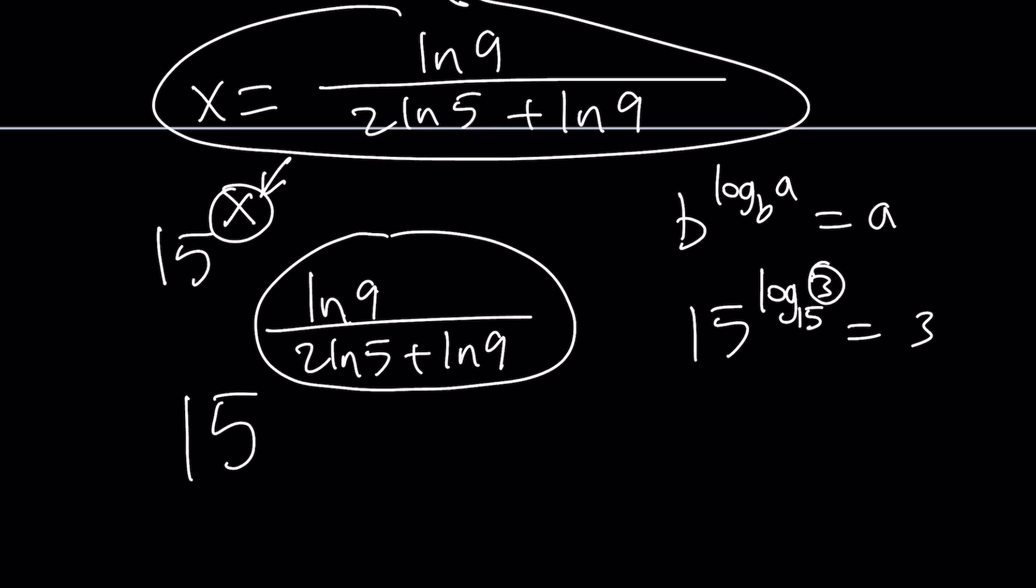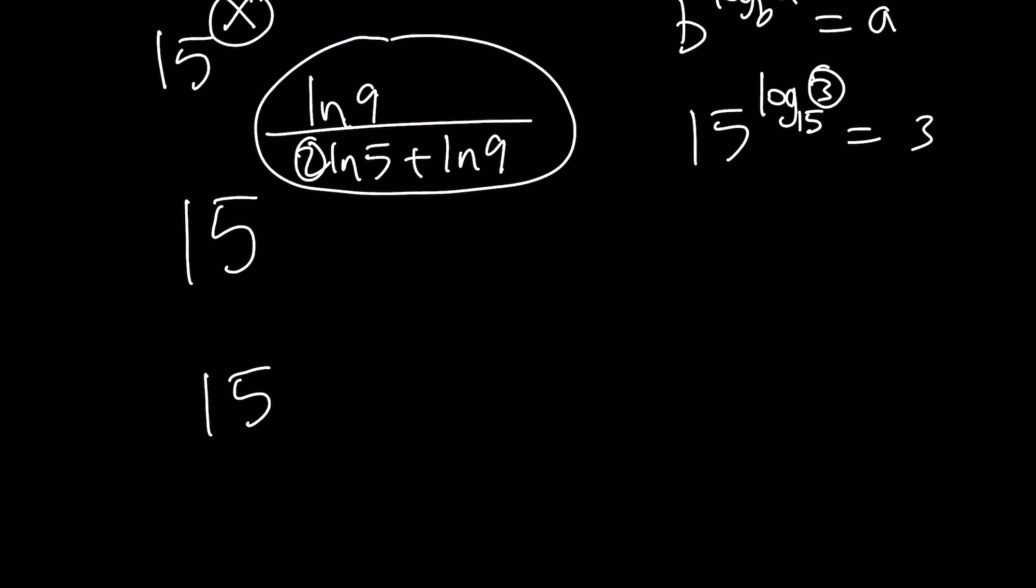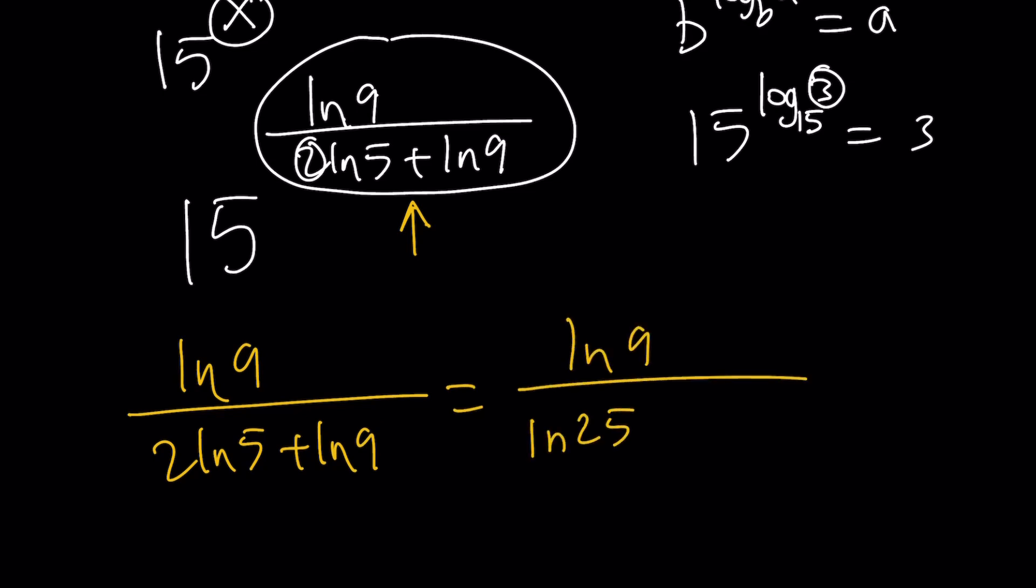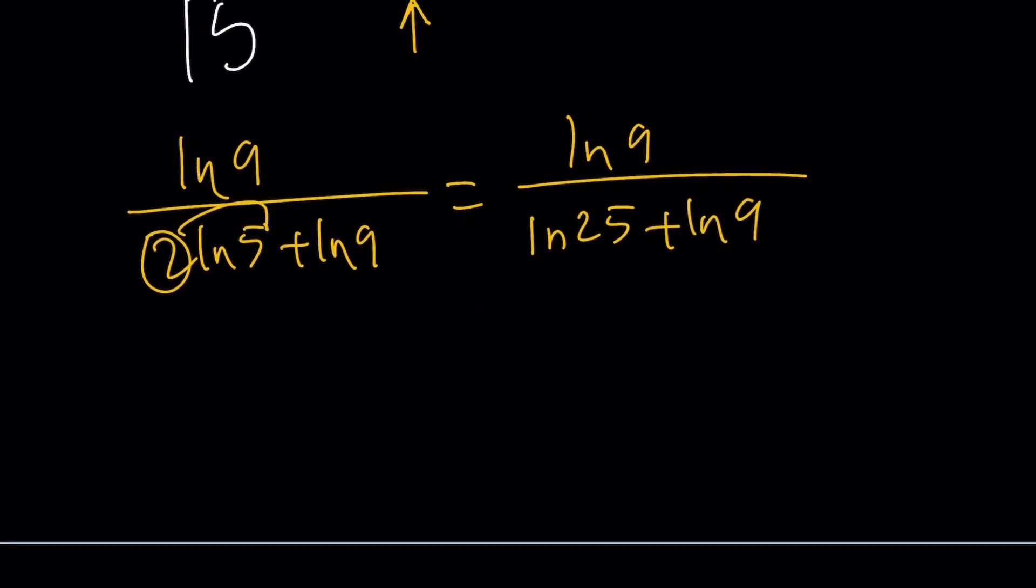First of all, I'm thinking about putting this 2 up as a power. What is ln 9 over 2 ln 5 plus ln 9 equal to? Let's write it as ln 25 plus ln 9, because this is 5 squared. Then 25 times 9 equals 225, so ln 9 over ln 225. After we do this condensing, we can expand again in a different form.